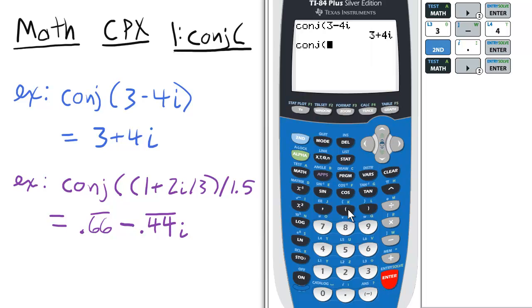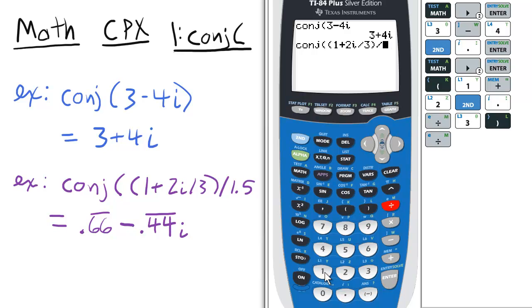Then open another set of parentheses here, and enter 1 plus 2i divided by 3, close parentheses, divided by 1.5, enter.